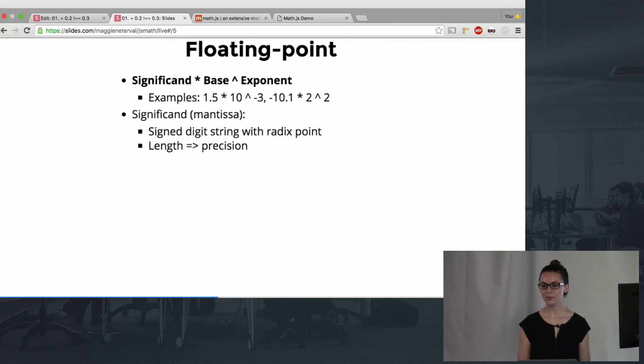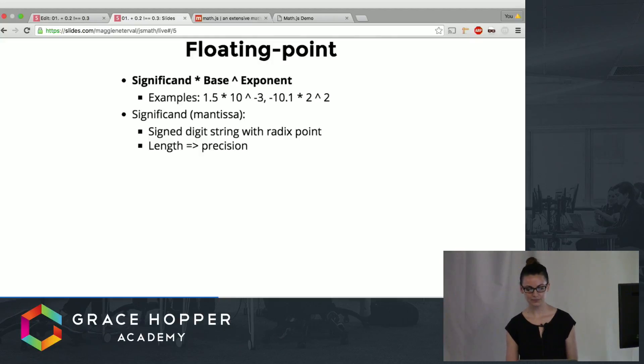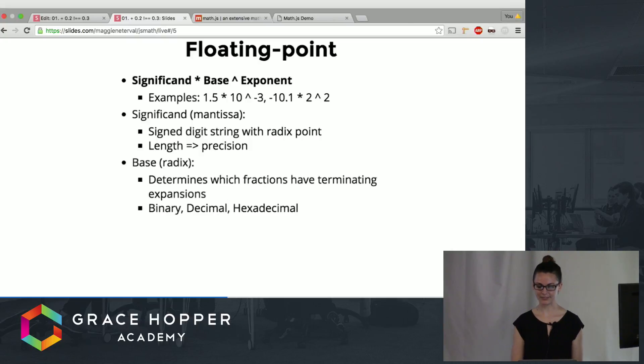So a floating point is a system of storing numbers and it will look familiar if you've ever worked with scientific notation. It's very similar. It consists of the significant times the base raised to the exponent. A few examples are listed there. The significant is also called the mantissa.